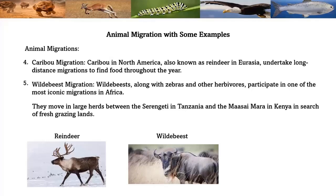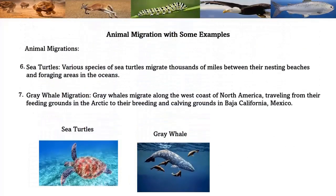Wildebeest migration: wildebeest, along with zebras and other herbivores, participate in one of the most iconic migrations in Africa. They move in large herds between the Serengeti in Tanzania and the Maasai Mara in Kenya in search of fresh grazing lands. Various species of sea turtles migrate thousands of miles between their nesting beaches and foraging areas in the ocean.